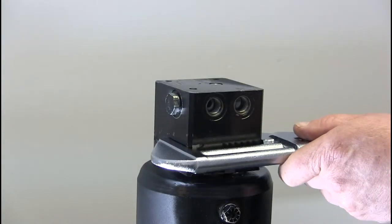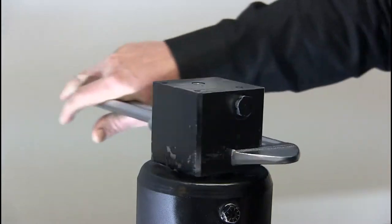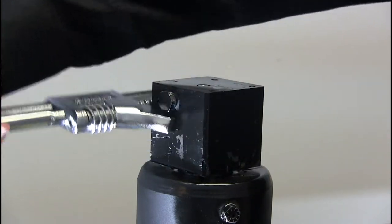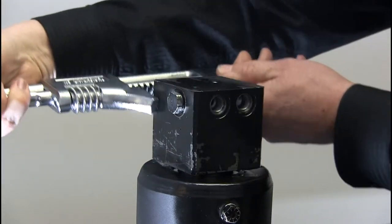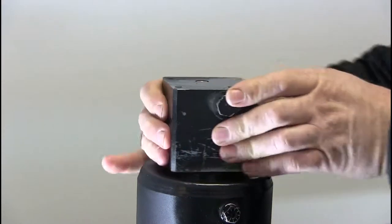We then remove the valve block, turning it several turns until it becomes loose to take off by hand.